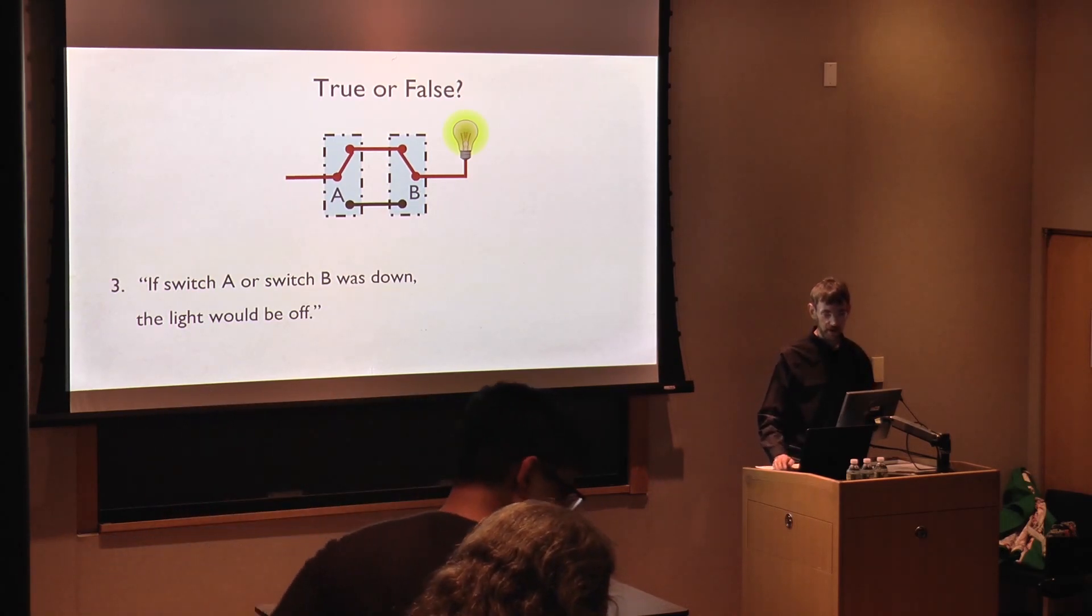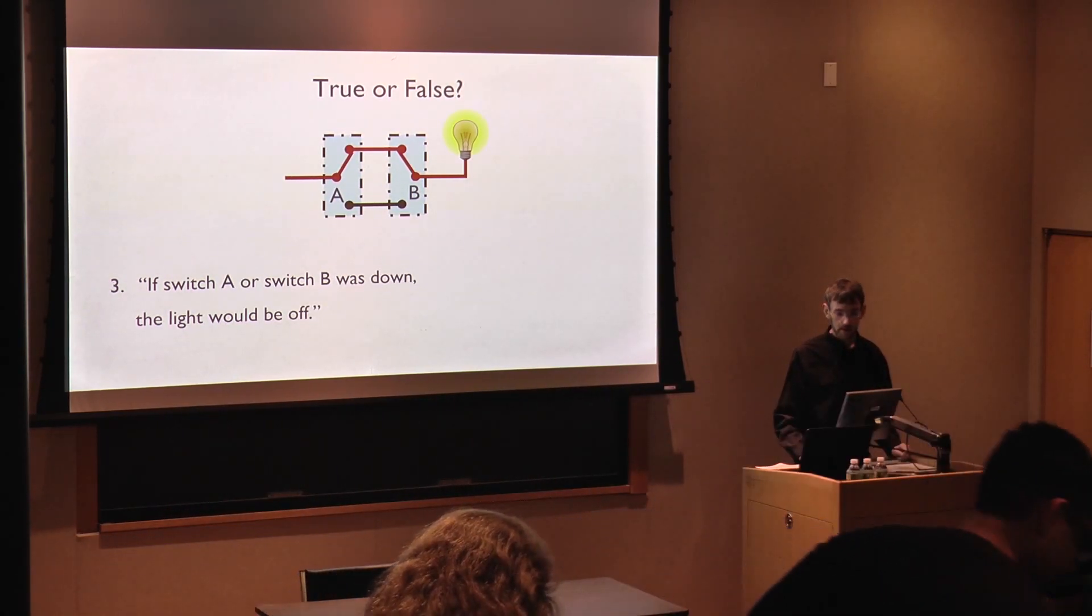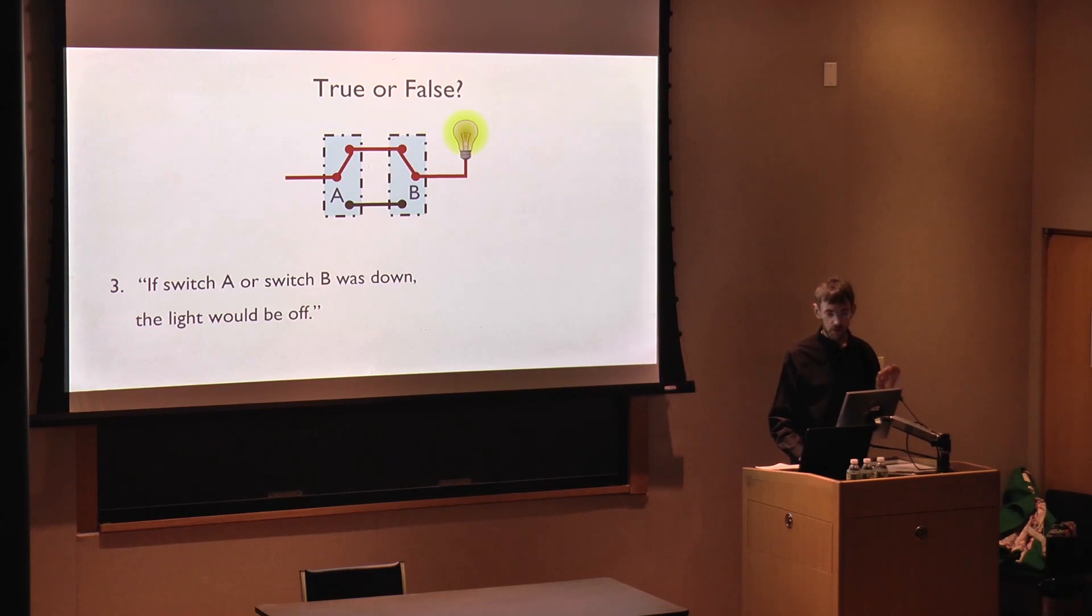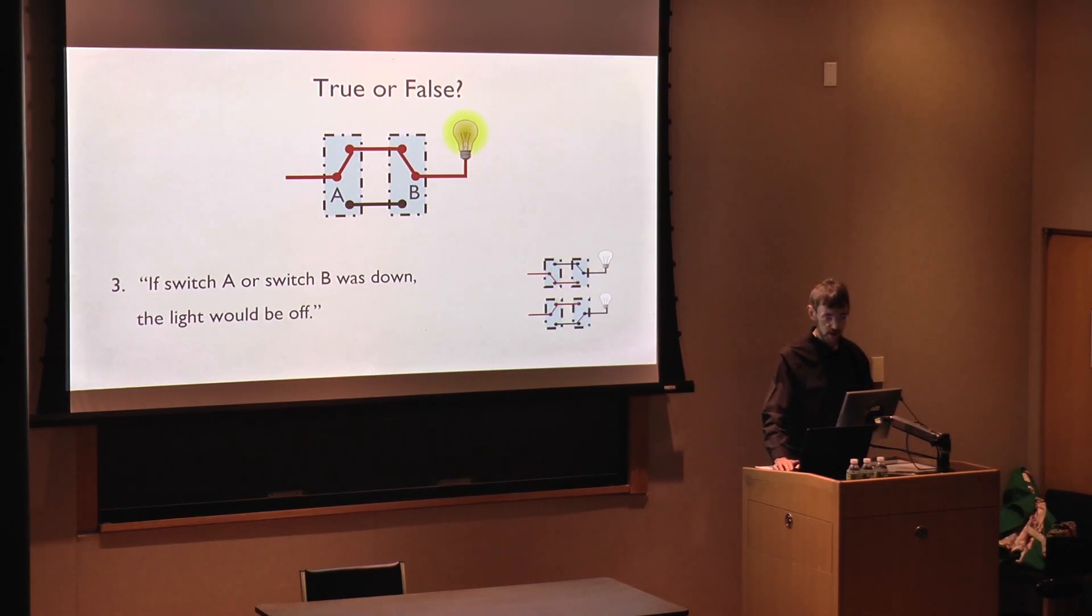Now here's a third counterfactual. If switch A or switch B was down, the light would be off. Please raise your hand if you agree. Okay. Now most people that we ask and most of you guys agree. And I think this sentence makes us consider two alternate states of affairs. Either we toggle switch A or we toggle switch B. And either way, the light is off. So we agree with the sentence.